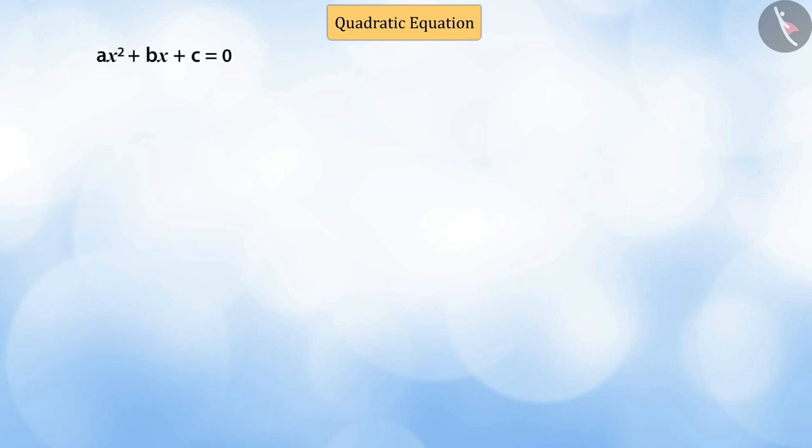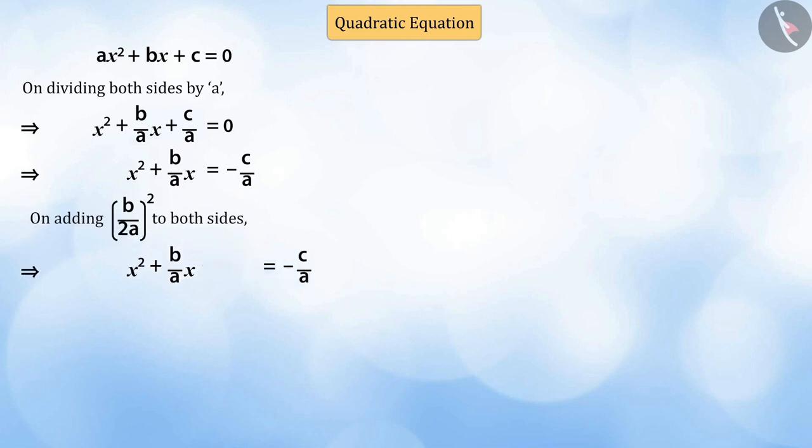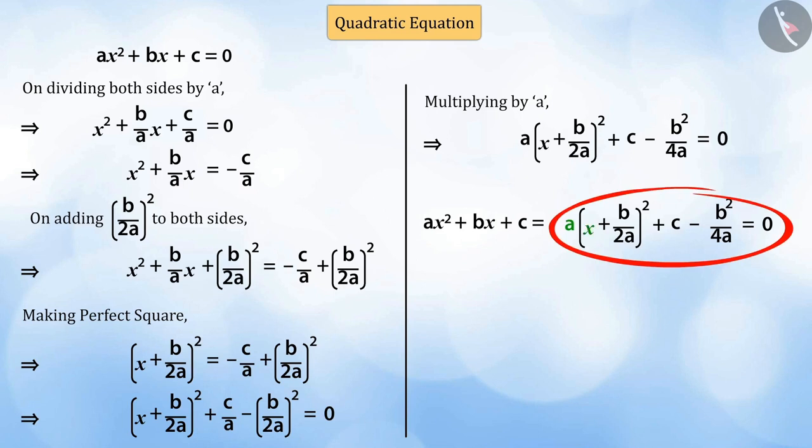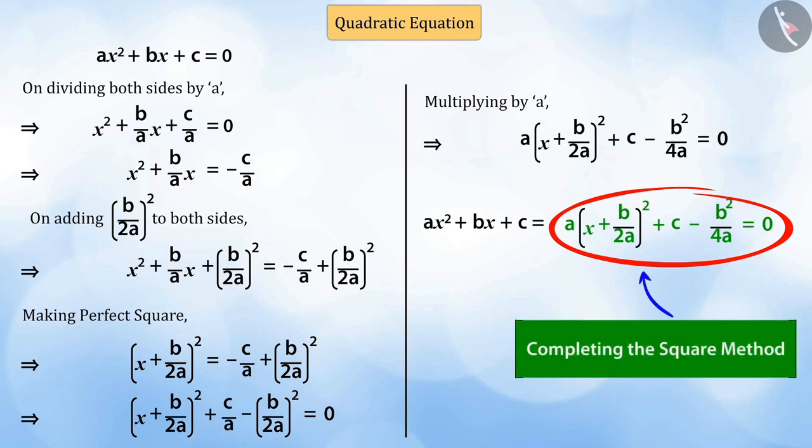In the same way, we can solve any quadratic equation by converting the term minus b square by 4a into a perfect square and finding the solution of a multiplied by x plus b by 2a, the whole square, plus c minus b square by 4a equal to 0. This method is known as completing the square method.